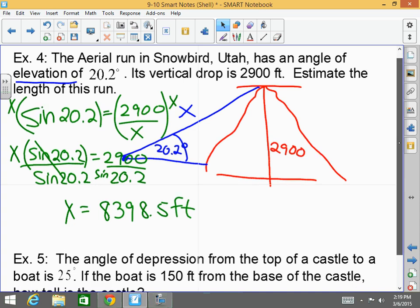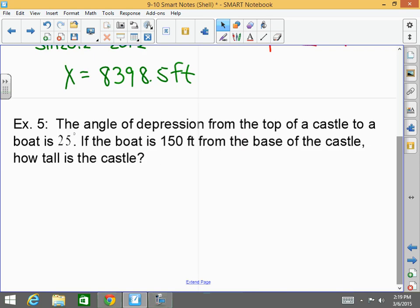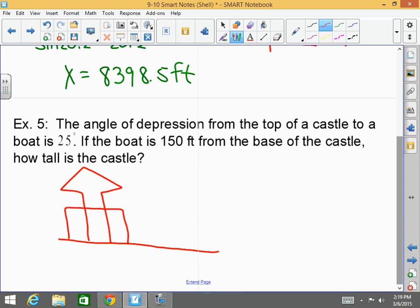Now, the angle of depression from the top of the castle to a boat is 25 degrees. If the boat is 150 feet from the base of the castle, how tall is the castle? So I have this castle. Yeah, I know. My drawings are awesome. So I have this castle here, and the angle of depression, here's where it gets important. The angle of depression, guys, please pay attention to this. This is my baseline. My angle of depression comes down like this. This is my angle of depression. That's 25 degrees.